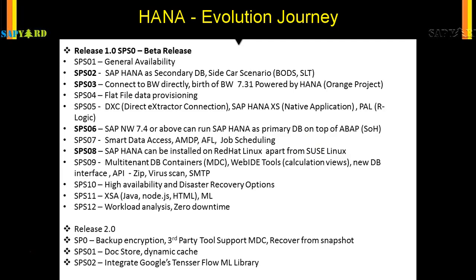In Service Pack 8, HANA could be installed on Red Hat Linux in addition to the regular SUSE Linux. There were many more additions which you can read on this slide, but the main milestones were: the sidecar scenario, then BW on HANA, and then SAP ABAP on HANA — all worth mentioning.